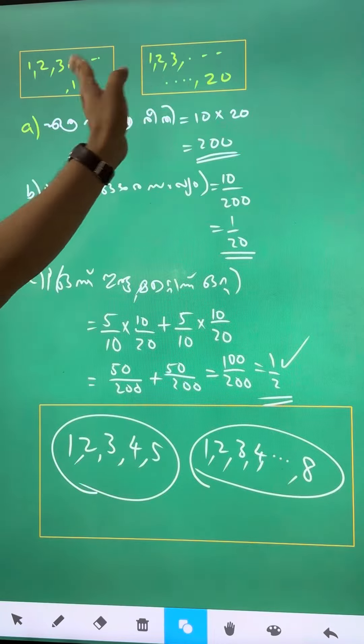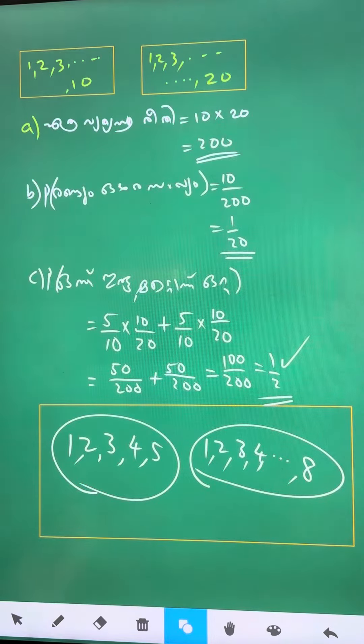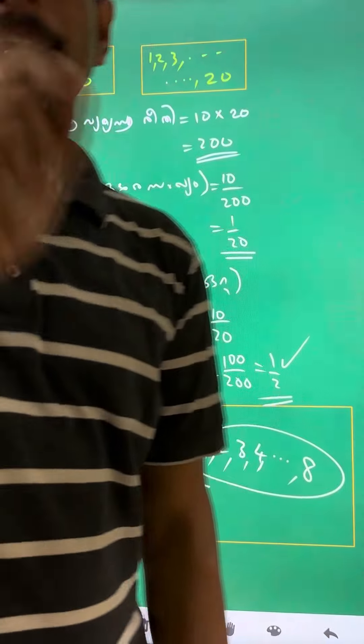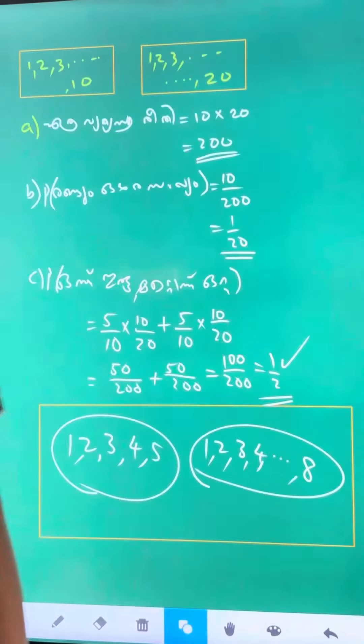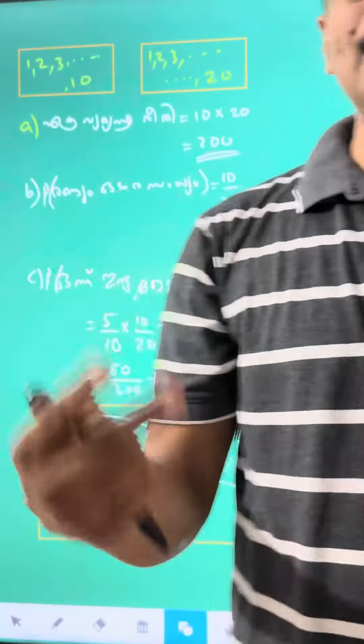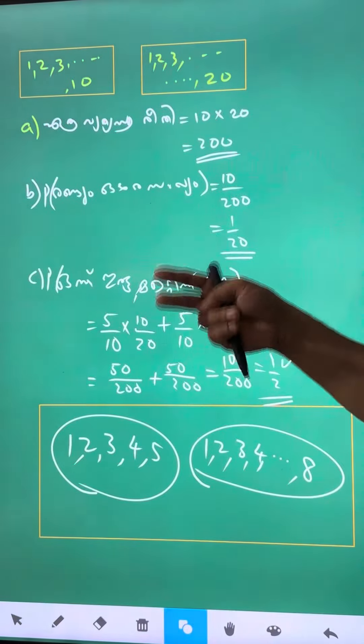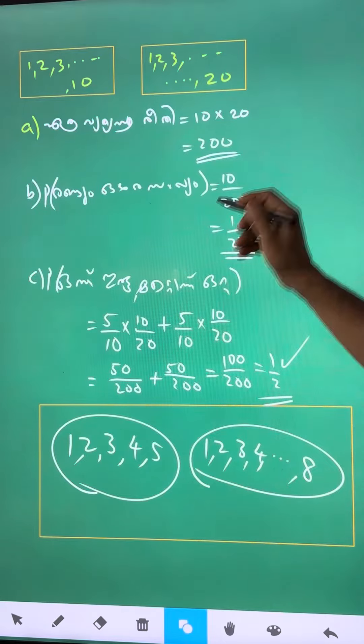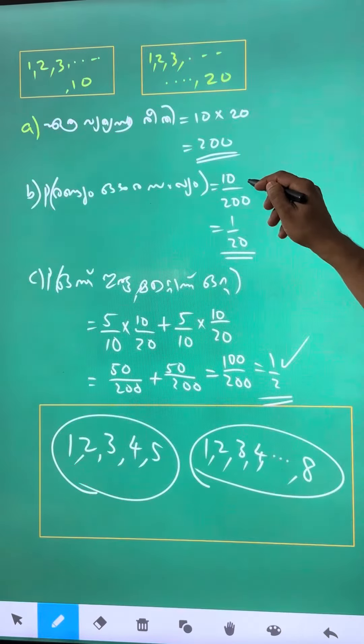We're trying to get 10 numbers in the set: 1, 2, 3, 4, 5, 6, 7, 8, 9, 10. Then 10. Then 10 by 20.